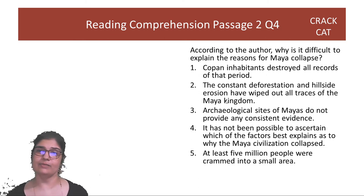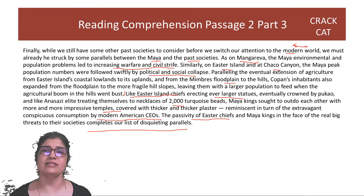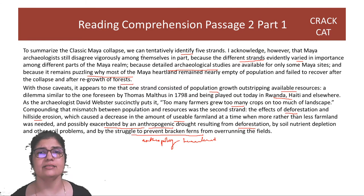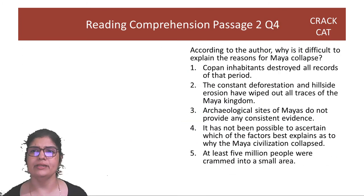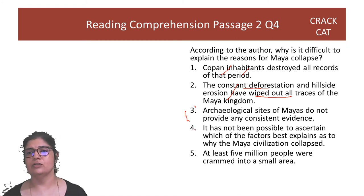Question four: According to the author, why is it difficult to explain the collapse? That was right in the beginning—you don't know which strand is important. There are these strands, but they varied in importance, and only some sites are available. Now let's look at options. Copan inhabitants—Copan was an example much later. This is clearly wrong. Of course it's some other part only, nothing to do with Maya. Constant deforestation, no. What is the reason for absence of traces? We don't know. Do not provide consistent evidence—perhaps. This is best: which factors best explain. Consistent evidence. We know the entire area is not available. But conflicting has not been mentioned. So the answer is option four.